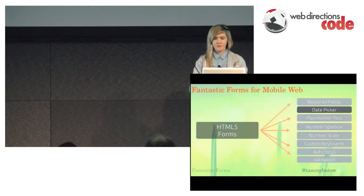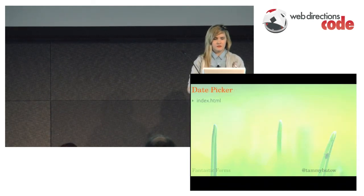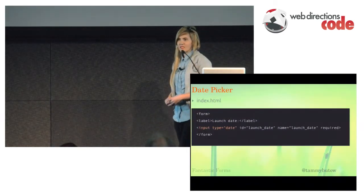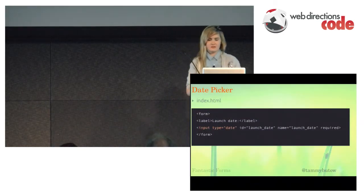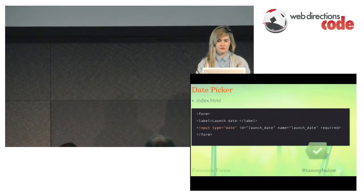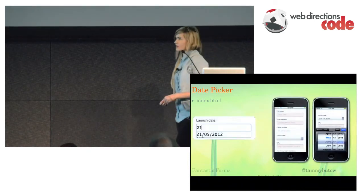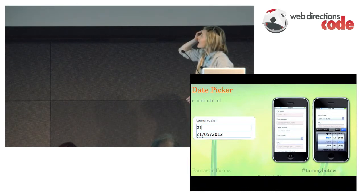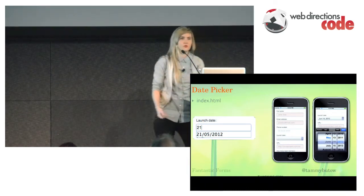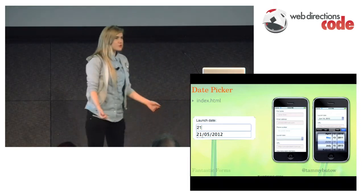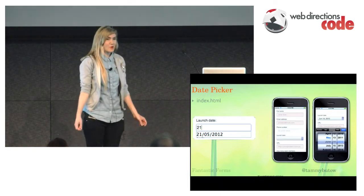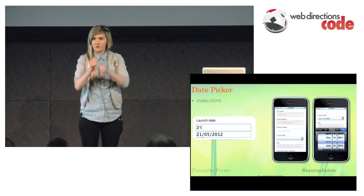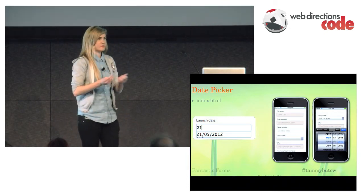If we look at date picker, you just have to say the input type is equal to date, and then you're going to get your date picker. On the web it's not going to work the same as it would on mobile, but using input type equals date on mobile is really handy because it's really easy for somebody to quickly scroll through and use the native date picker.